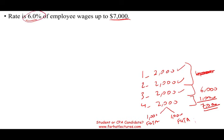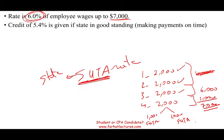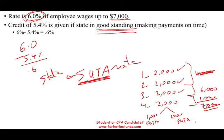The FUTA rate is 6%, but this changes. If the company pays their state unemployment tax (SUTA) rate on time and is considered in good standing, the federal government will give a credit of 5.4%. So your net FUTA rate is 0.6% — this is your net rate for FUTA.